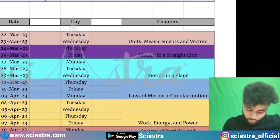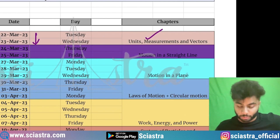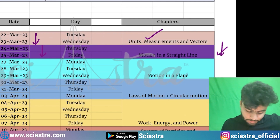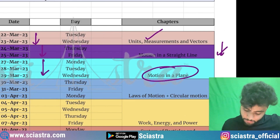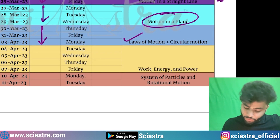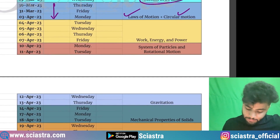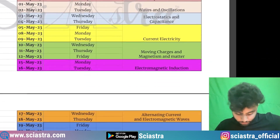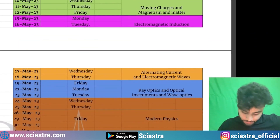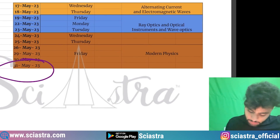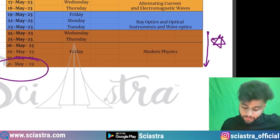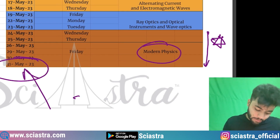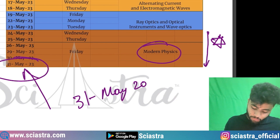Now the physics schedule. First two days: units, measurement, vectors, and basics. Next two days: motion in a straight line. Then three days: motion in a plane. Then three days: laws of motion and circular motion. Then work, energy, and power will be covered in almost four days as it is important. We are covering the whole physics syllabus, and modern physics is very important — we are giving it much more time — to finally cover everything by 31st May 2023.